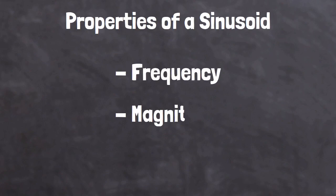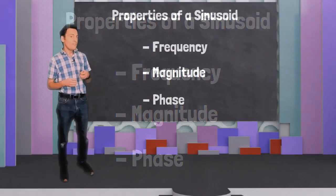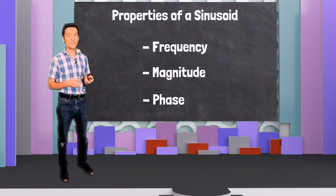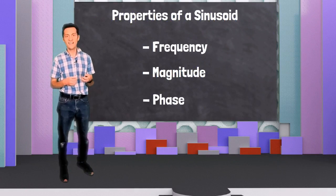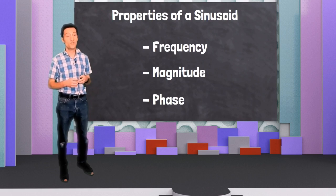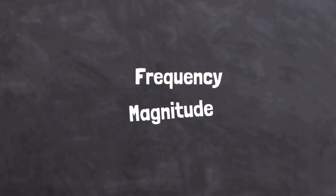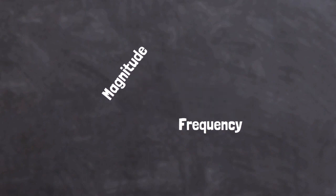Sinusoids have three properties: frequency, magnitude and phase. If the Fourier Transform is to find out which sinusoids your signal is made out of, it needs to test sinusoids with similar properties to the ones in your signal.